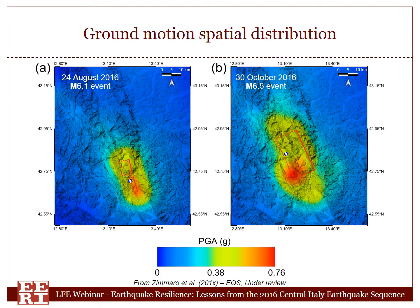We've done some ground motion spatial distribution analysis, and these are maps showing the spatial distribution of peak ground acceleration after the 24 August event and the 30 October event. In both cases, there's a large area involved in these earthquakes, and very high peak ground accelerations were recorded throughout. The 30 October event caused accelerations at around 0.8 G at its maximum, which is really remarkable.